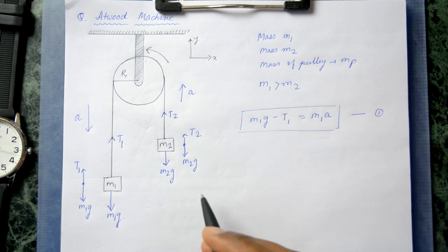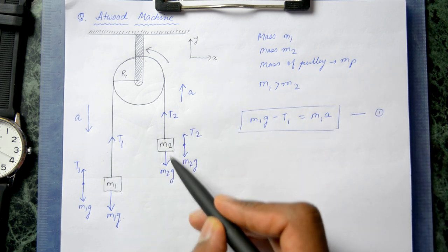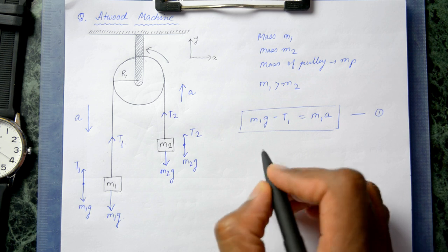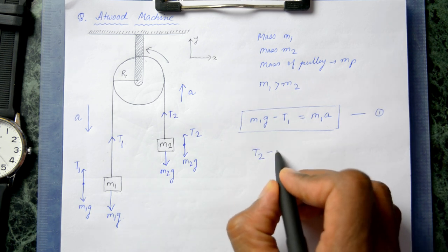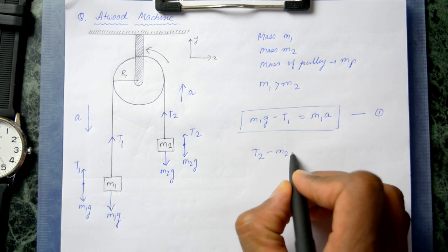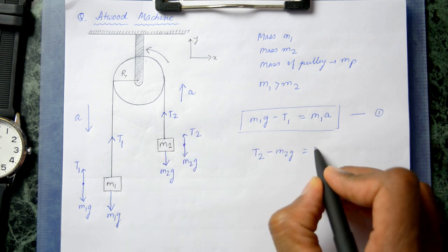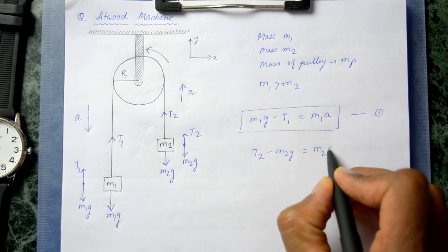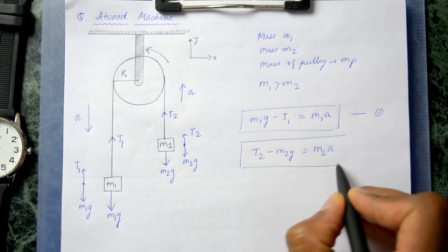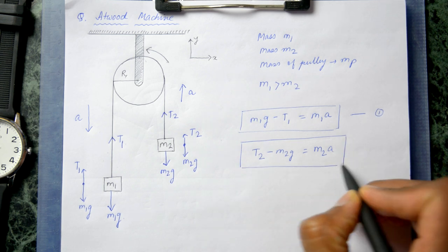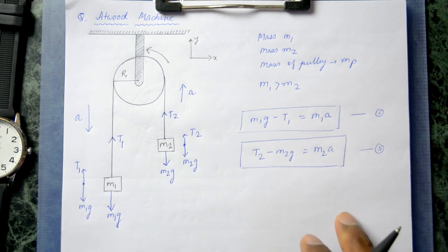The second equation of motion is similar. Since m2 is moving upward, t2 is greater than m2g. So t2 − m2g = m2a. Both accelerations are the same because we're dealing with an inextensible string.